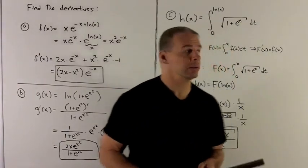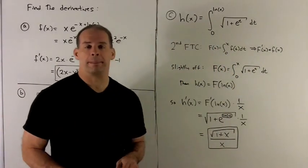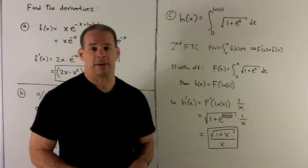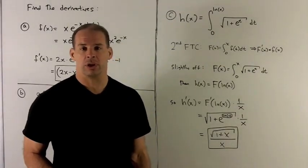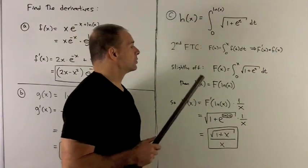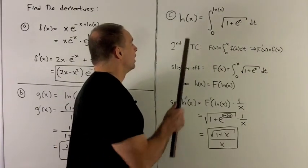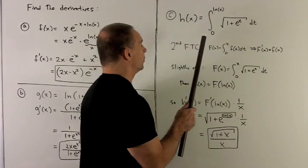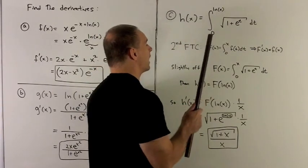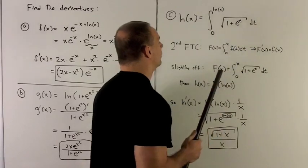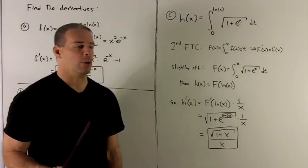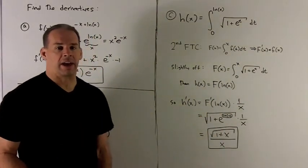For our third function, I'm going to pull out a little bit of second fundamental theorem of calculus, just because it's good to always re-look at this guy. So I'm going to define my function as h(x) equal to the integral from 0 to natural log of x of square root of 1 plus e to the t dt.